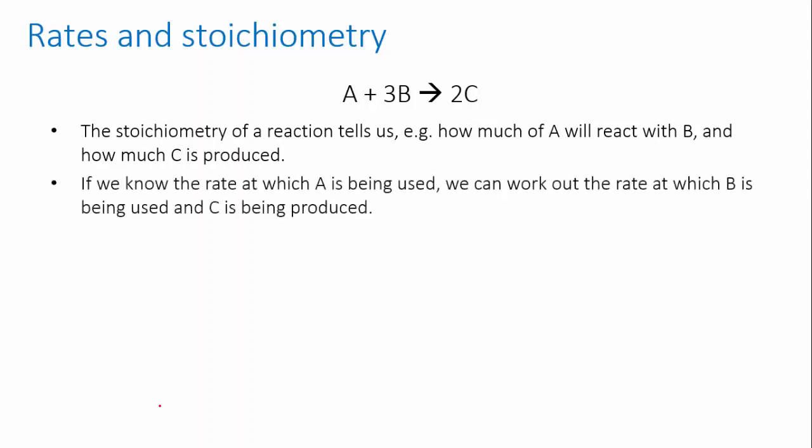If you know the rate at which one of your chemicals is being used up, stoichiometry can tell you how fast the others are being used or produced. For instance, in this hypothetical reaction we've got here, A plus 3B goes to 2C.